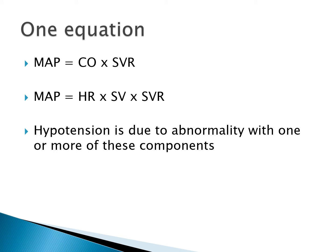Mean arterial pressure is equal to cardiac output times systemic vascular resistance. We can expand that out slightly because cardiac output is the product of heart rate and stroke volume. This gives us the equation: mean arterial pressure equals heart rate times stroke volume times systemic vascular resistance.